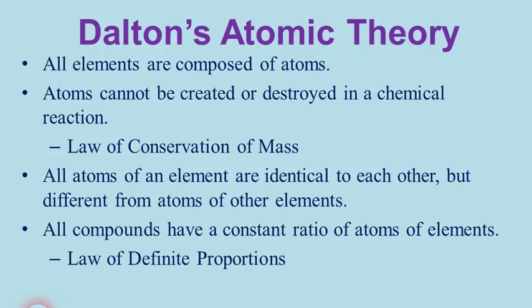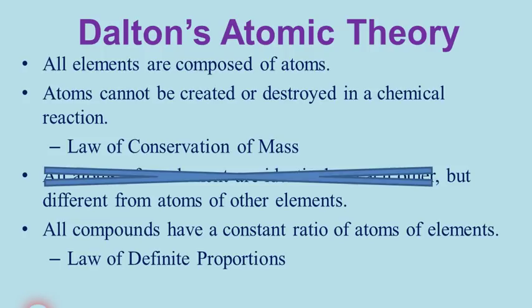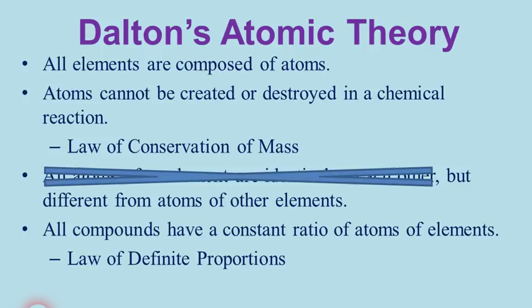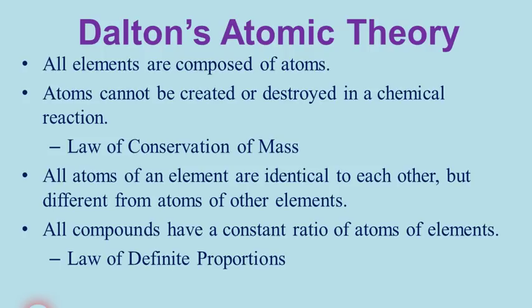Dalton's atomic theory has stood the test of time and is still the foundation of how we think about atoms today — except for one part. That third part: we know today that not all atoms of an element are identical, because there are things called isotopes, where a single element can have several different varieties. But the atomic theory was ahead of its time. Without the instruments and microscopes we have today, scientists who believed in atoms didn't have much of a way to prove they existed, and still thought atoms were indivisible blobs of matter.